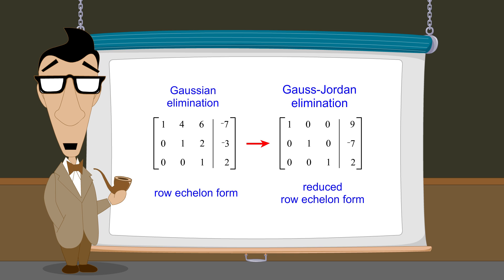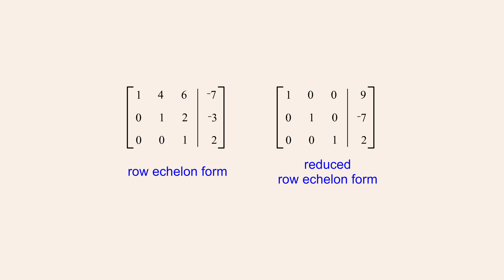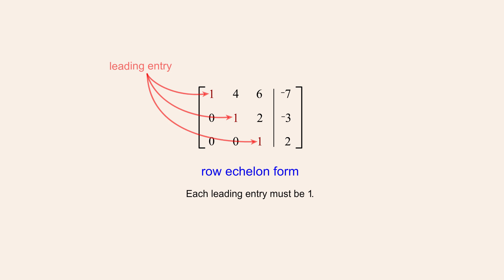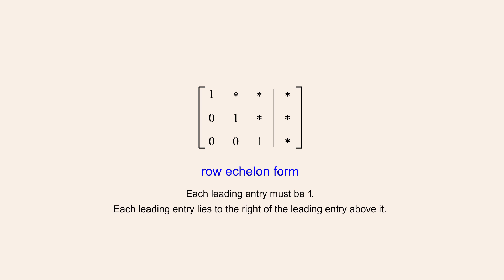So what exactly is reduced row echelon form? In the previous lecture, we saw that matrices in row echelon form must satisfy three requirements. The first requirement is that the leftmost non-zero entry in each row, called the row's leading entry, must be one. The entries to the right of a leading entry can have any value, zero or otherwise. The second requirement is that each row's leading entry must lie to the right of the leading entry in the row above it. And the third requirement is that if there are any rows which contain all zeros, those rows must be positioned last at the bottom of the matrix.